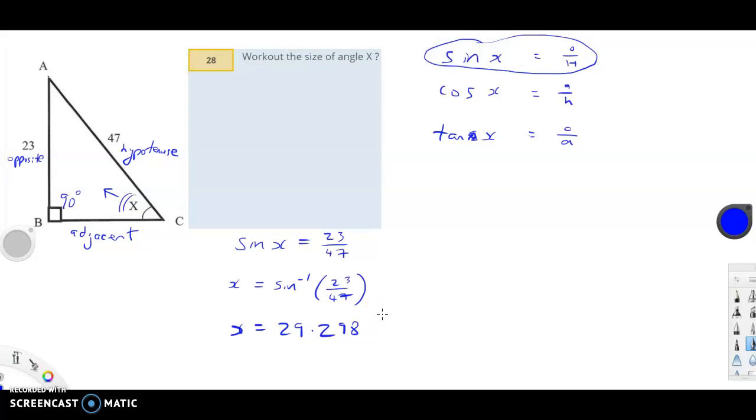When the 9 goes up by 1, the 29 effectively becomes 30. So, X equals 29.30 degrees. And that's the end of that one.